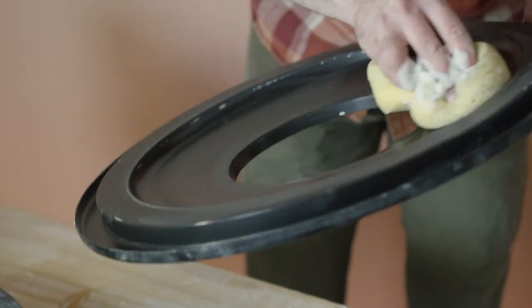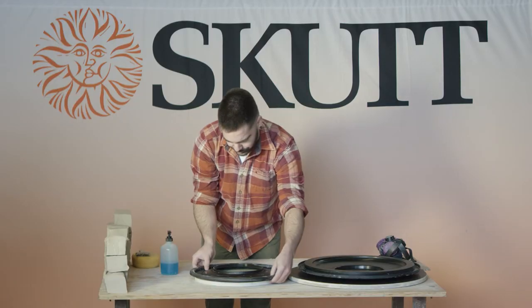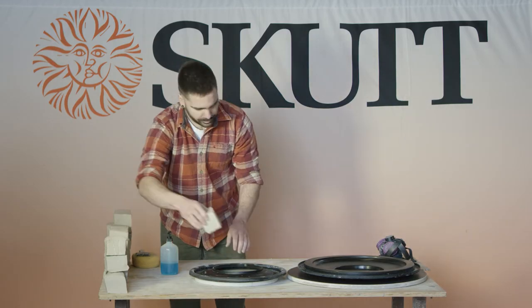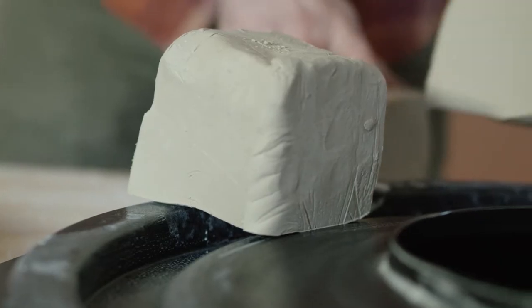Personally I use dish soap but you can use mold soap or a spray release if you want to. Once you've done that you want to make sure that you have your weights to hold the mold onto the surface and hold it down. Personally I use a chopped up bag of clay.